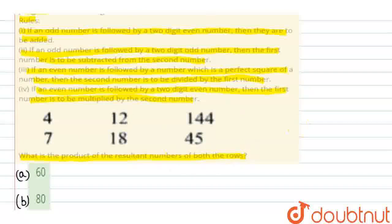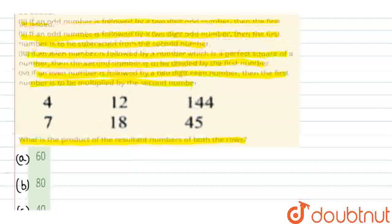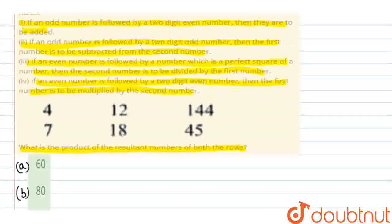Simply, the two rows, the resultant number's product. This is our question. We will see. First, we'll solve the first row. Given are four, twelve.